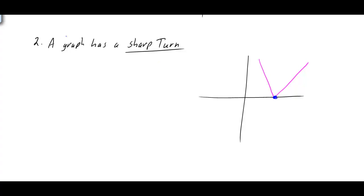That's because if you look at the derivative from the left side, your derivative is going to be negative. And if we look at the derivative from the right, it's going to be positive. So from the left and from the right, your derivatives are not equal, and also there is no tangent line. Therefore, if you have a sharp turn in the graph, your derivative does not exist.